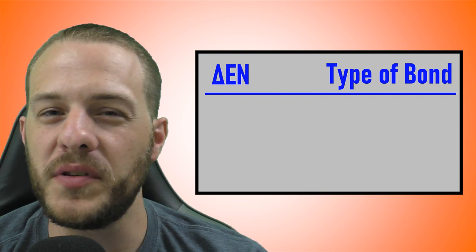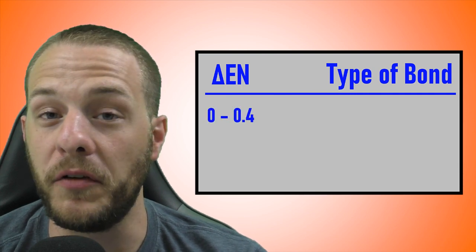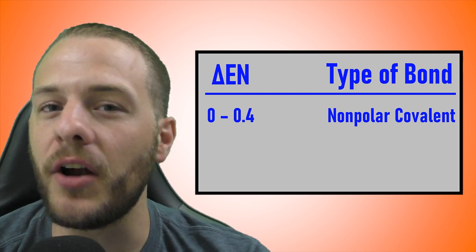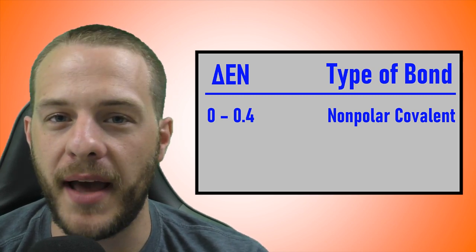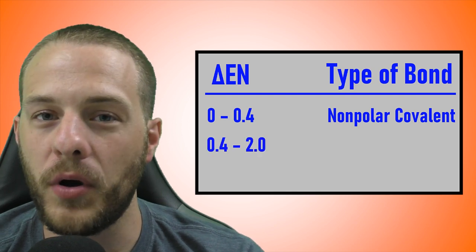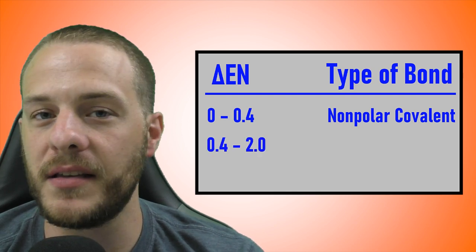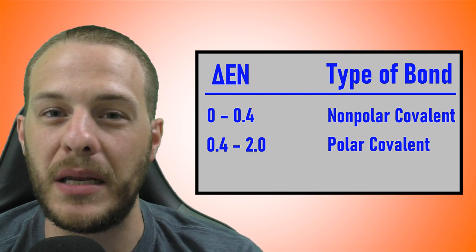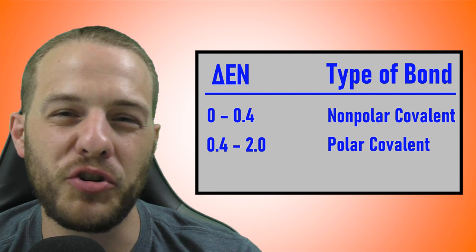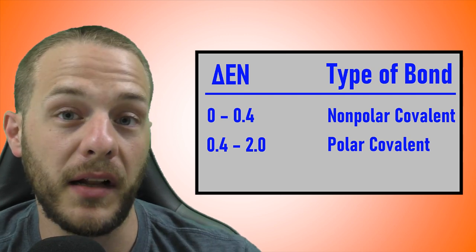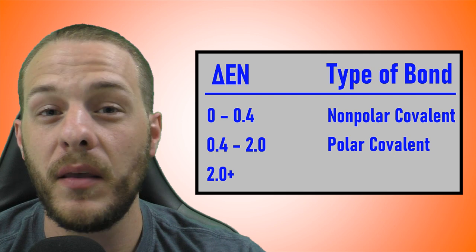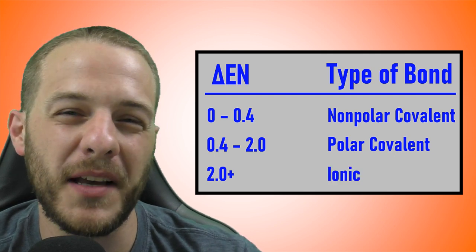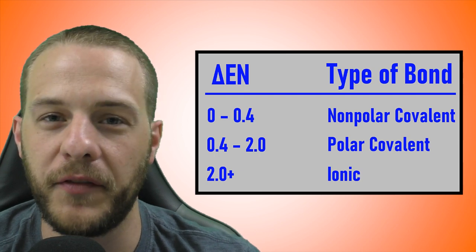In general, if the difference in electronegativity, delta En, falls between 0 and 0.4, then you've got a nonpolar covalent bond — an equal sharing of electrons between the two atoms. If delta En is between 0.4 and 2.0, then this is considered a polar covalent bond — an unequal sharing of electrons resulting in partial positive and partial negative charges. And finally, if delta En is 2.0 or larger, then we've got an ionic bond, in which electrons are completely transferred from the less electronegative atom to the more electronegative atom.